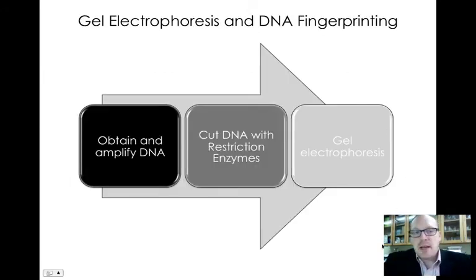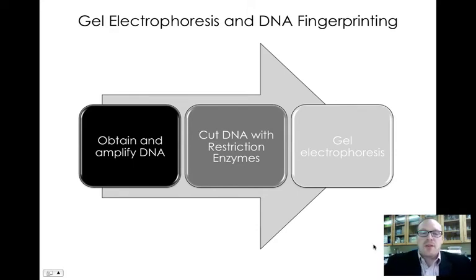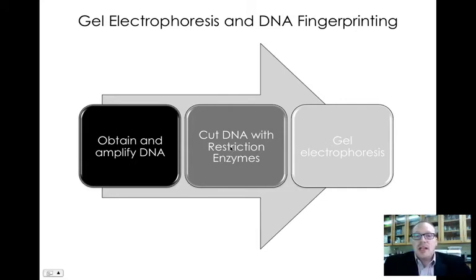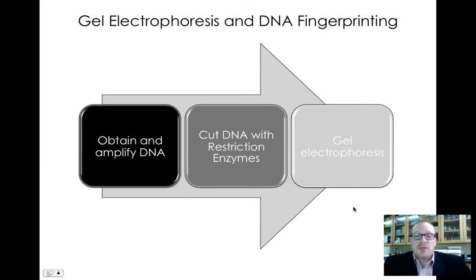Let's review the steps for making a DNA fingerprint. First, obtain the DNA — DNA extraction, which we'll do in the lab. Second, amplify the amount of DNA by making multiple copies using PCR. Third, cut up the DNA with restriction enzymes to get different fragment sizes for different individuals. Then run those fragments across a gel using gel electrophoresis.